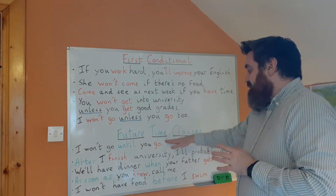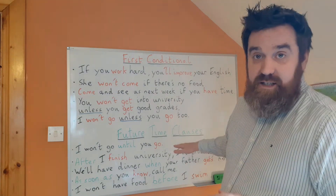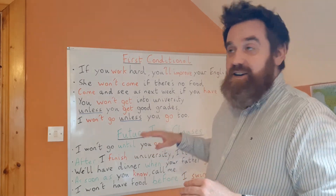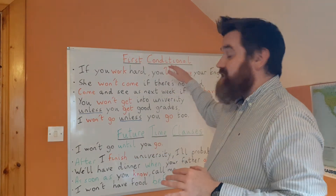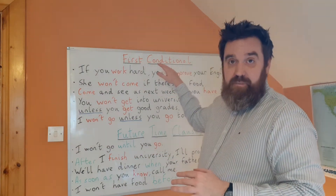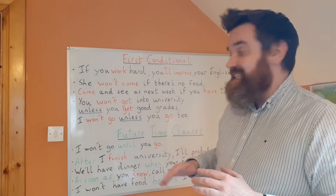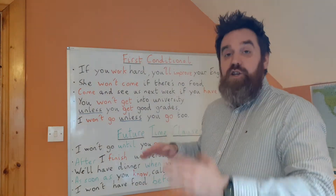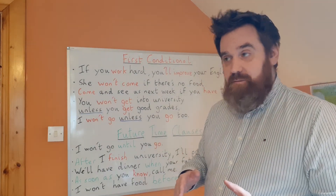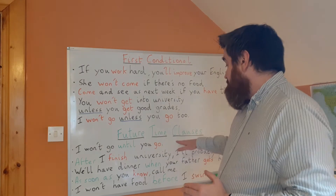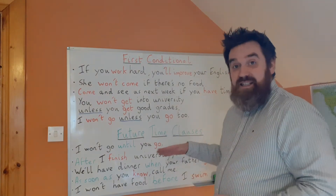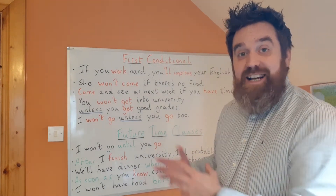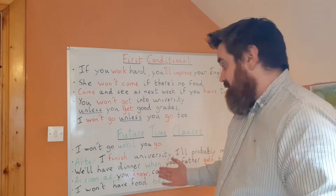Now let's move on to future time clauses. Future time clauses are similar to the first conditional, but the difference is: with the first conditional you don't know the future; with future time clauses you do know the future. I'll explain this with the first example.